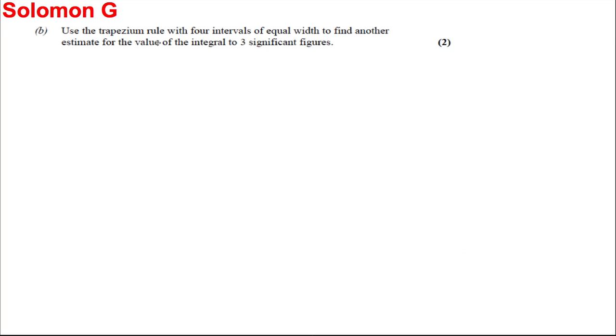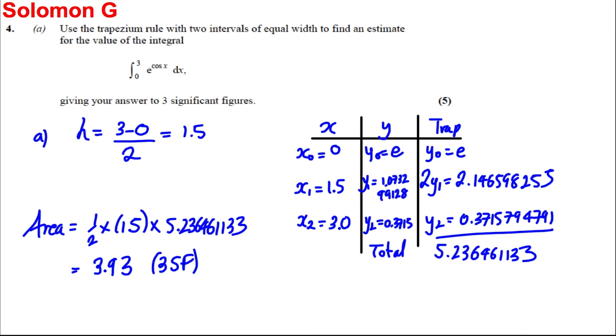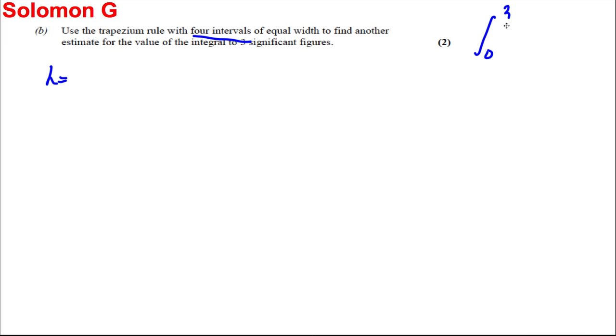So next part, I'd like to now use four intervals. So my H is going to be, we're working at the integral between 0 and 3 of e to the cos x dx. So my H is going to be 3 take away 0 over 4, it's going to be equal to 0.75.